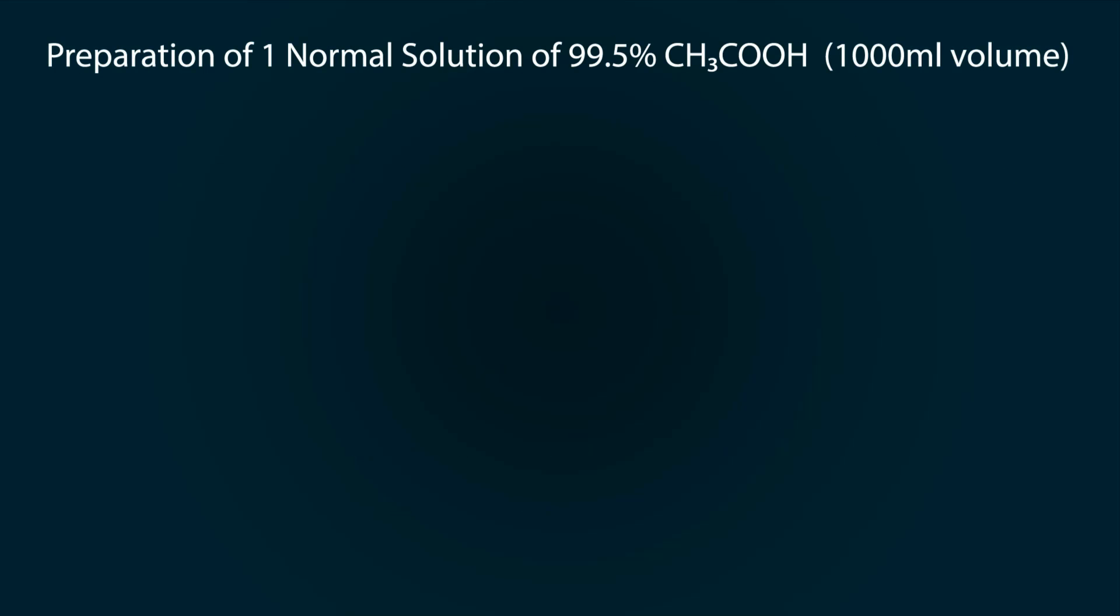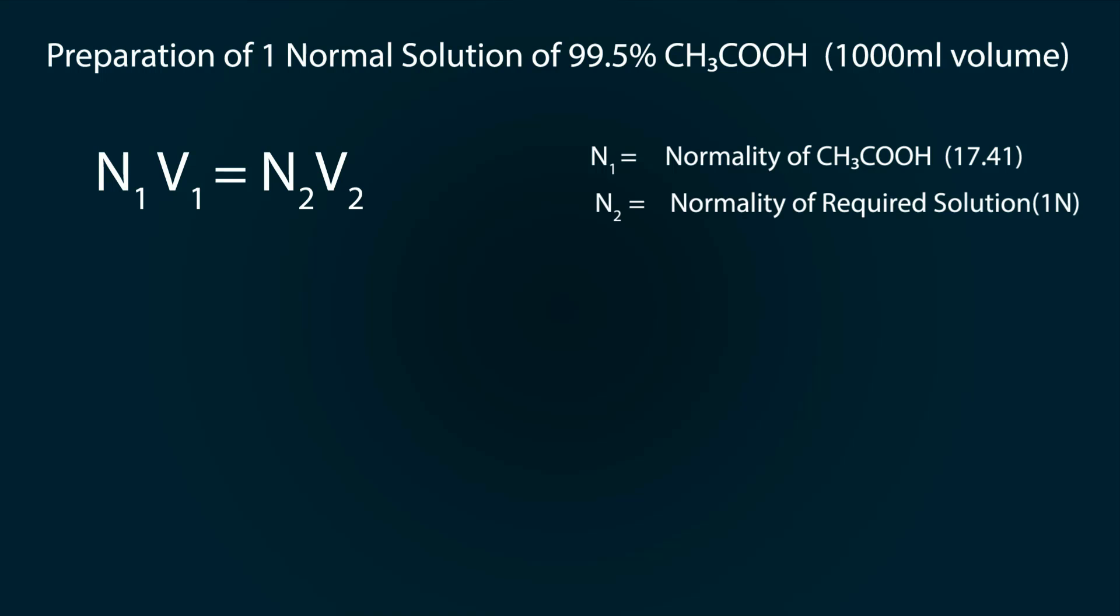To find out the volume, we use the dilution formula which is N₁V₁ equals N₂V₂. Where N₁ equals normality of acetic acid which is 17.41, and N₂ is the normality of our required solution which is 1.